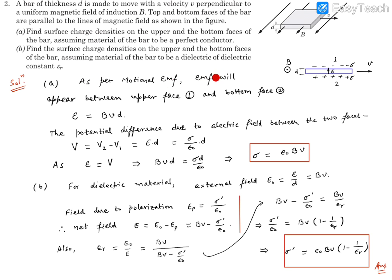As per motional EMF, there will be an EMF between these two faces. The bar is moving in the x direction, and the magnetic field is in the z direction. For the length along the y-axis, which is d, there will be an EMF due to motional EMF. This motional EMF equals Bvd, which is the EMF between the upper face and bottom face. Now, which face will be positive and which will be negative, we can easily identify. Let me explain.